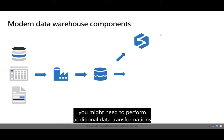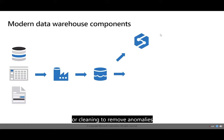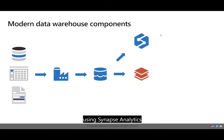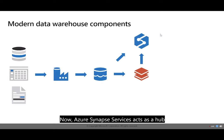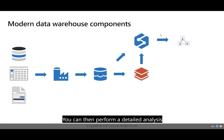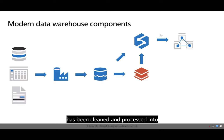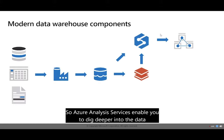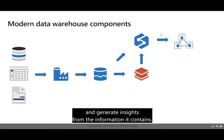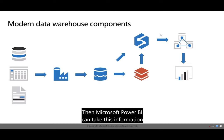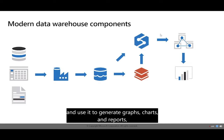For example, you might need to perform additional data transformations or cleaning to remove anomalies and generally tidy up the data set. You can then store the clean data using Synapse Analytics. Azure Synapse Services acts as a hub holding this cleaned business data, and you can then perform a detailed analysis using Azure Analysis Services, which enables you to dig deeper into the data and generate insights. Microsoft Power BI can then take this information and use it to generate graphs, charts, and reports.